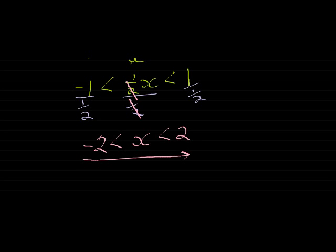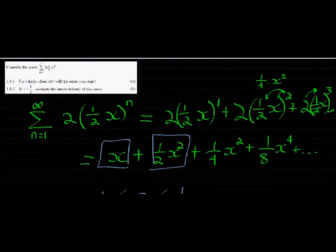Those are the values that x can take so that any value between negative 2 and 2 will cause this series to converge.